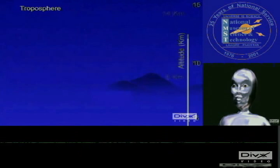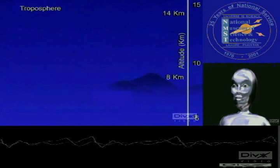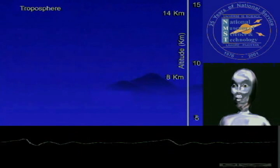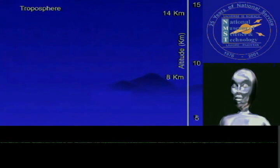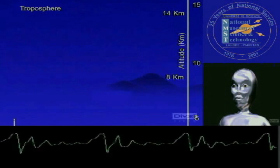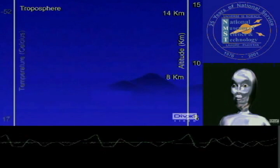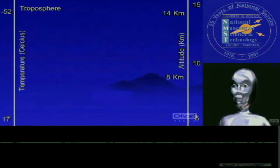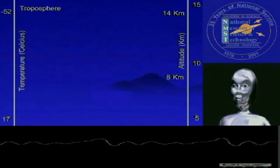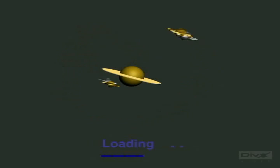The troposphere starts at the Earth's surface and extends 8 to 14.5 km. This part of the atmosphere is the most dense. As you climb higher in this layer, the temperature drops from about 17 to minus 52 degrees Celsius.